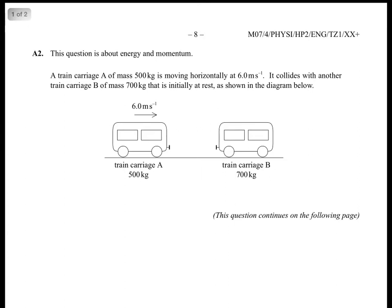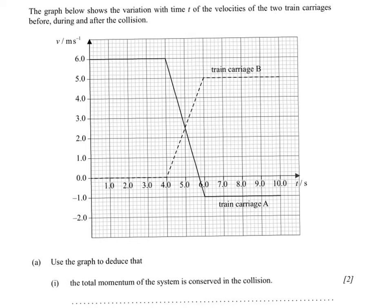A train carriage A of mass 500 kg is moving horizontally at 6 meters per second. It collides with another train carriage B of mass 700 kg that is initially at rest, as shown in the diagram below. The graph shows the variation with time of the velocities of the two train carriages before, during, and after the collision.